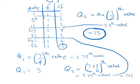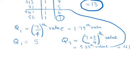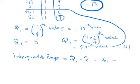The last thing we were asked to calculate is the interquartile range. The interquartile range is Q3 minus Q1, which is 41 minus 5, and 41 minus 5 is 36. So the interquartile range is 36.